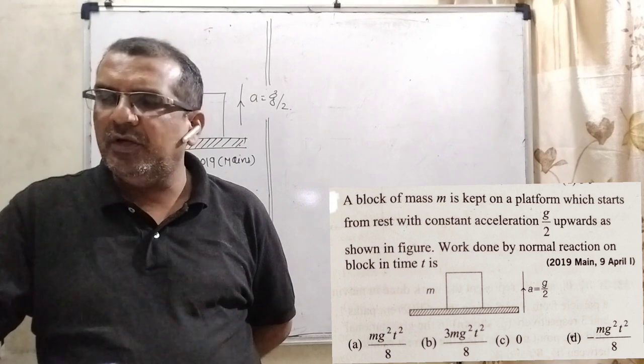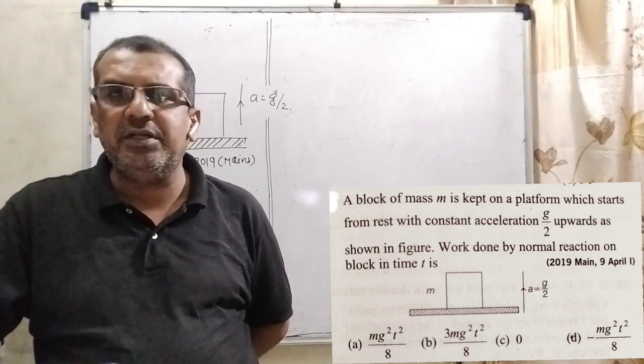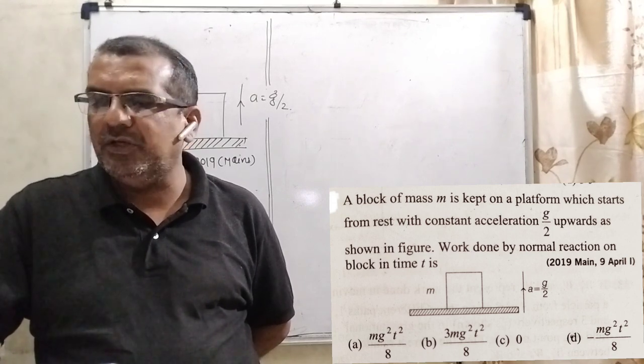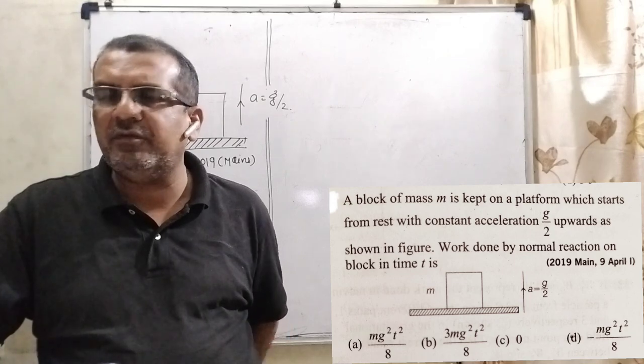Option A: mg²t²/8. Option B: 3mg²t²/8. Option C: 0. Option D: -mg²t²/8.